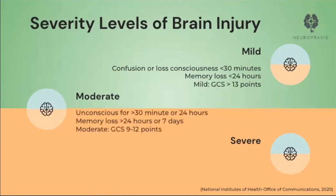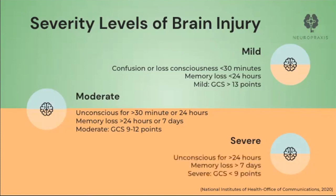Moderate TBI is characterized by loss of consciousness, confusion, and disorientation for 30 minutes up to 24 hours, accompanied by post-traumatic amnesia that can last between 24 hours to a week. Severe brain injury is diagnosed with a Glasgow Coma Scale of 9 or less, or following unconsciousness that lasts longer than 24 hours, memory loss, or post-traumatic amnesia that persists for more than a week.